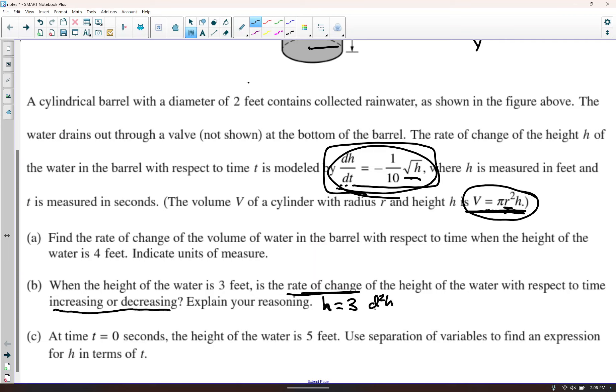So we need second derivative. So d2h over dt squared is equal to, well this is negative 1 tenth h to the 1 half. So we need negative 1 over 20 times h to the negative 1 half, but then times dh/dt. Now that's equal to negative 1 over 20 square root of h times negative 1 over 10 square root of h. So it ends up being 1 over 200 because the square root of h's cancel out, which is greater than 0, so increasing.